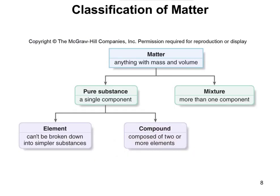In terms of the classification of matter, this slide helps confirm you have the right vocabulary. Matter is anything with mass and volume. From matter, we consider all matter as either a pure substance or a mixture. Primarily in this class, we're going to talk about pure substances for most of the course. A pure substance can either be an element or a compound.